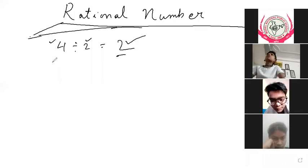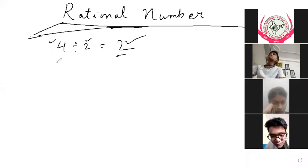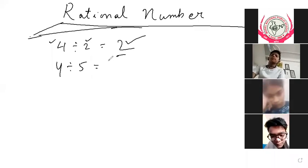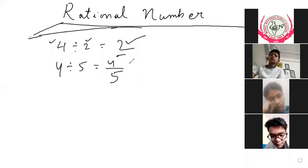But what happens sometimes? I will give you a question: 4 divided by 5. How do you divide this? 4 divided by 5 — how do you write this number, and which category does it belong to?